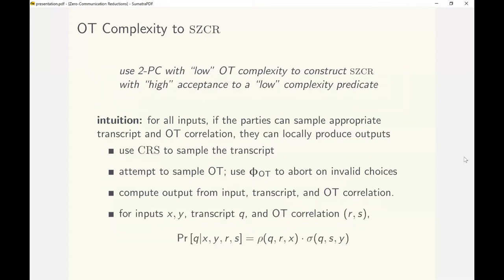The following idea is at the core of the way Alice and Bob sample their transcript and OT correlation in this construction. All communication protocols naturally decouple the joint distribution of Alice and Bob's view: the probability of any transcript Q conditioned on inputs and OT correlations is actually the product of two functions, rho and sigma, that depend only on what Alice sees and what Bob sees respectively.